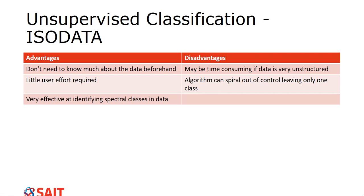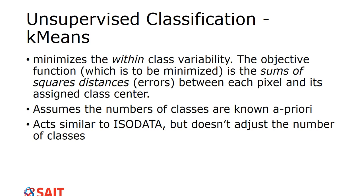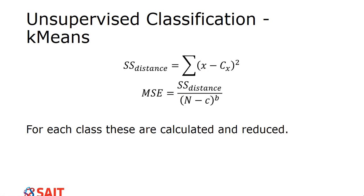K-means is the other unsupervised classification option in ENVI. It minimizes within-class variability by taking a function and summing the squared distances between each pixel and its randomly assigned class center. Unlike ISODATA, k-means assumes the number of classes is already known and locks in that number — it will not adjust the class count. If ISODATA isn't working, you can switch to k-means.